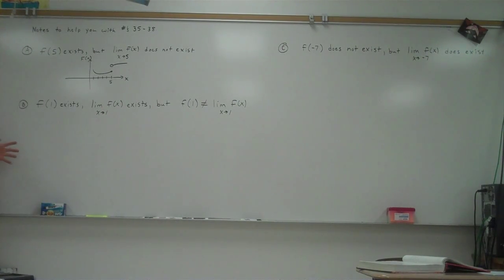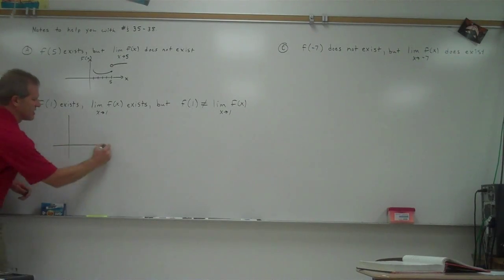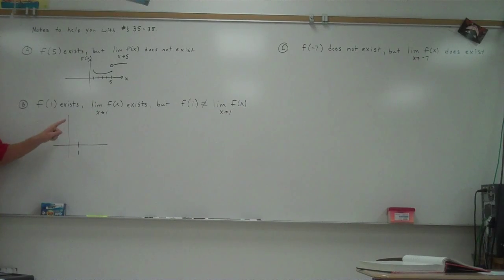All right, here's another example. f of 1 exists. So if f of 1 is going to exist, that means there has to be a point, a closed point, either above or below 1. So I'm going to just put that point somewhere. It doesn't really matter. Like I said, there's more than one solution to these problems.